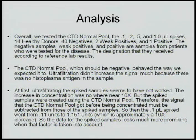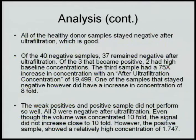The designations they had received were according to reference lab results. The CTD normal pool, which should be negative, behaved as expected. The spike samples performed really well, concentrating approximately 10 times as we were looking for. All the healthy donor samples stayed negative, which was a positive result for us. Of the 40 negative samples, 37 remained negative after ultrafiltration, which is a strong result. Of the three that became positive, two had high baseline concentrations, so we think that's not the fault of the ultrafiltration. A third sample had a very abnormally high increase in concentration that we are looking into.